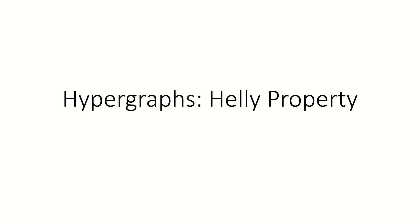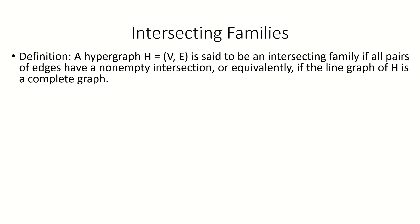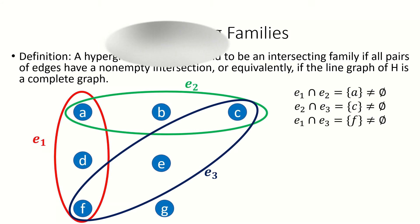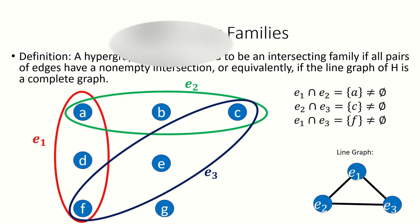Today we're going to look at the Heli property for hypergraphs. First, let's introduce two terms to help us state the Heli property. An intersecting family is a hypergraph whose pairwise intersections of edges are all non-empty. From another perspective, it's a hypergraph whose line graph is a complete graph.